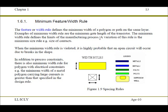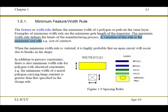A variation of the rule is the minimum size rule, which defines the size of the contact. That means the length and width of a contact cannot be less than the specified rule.